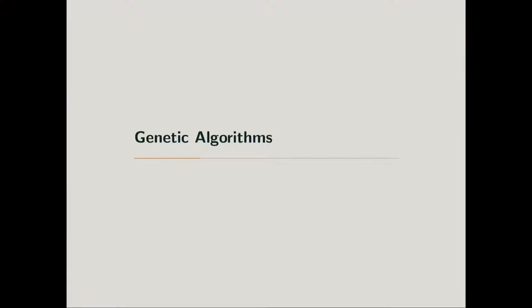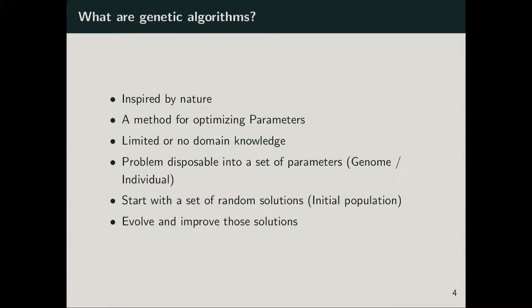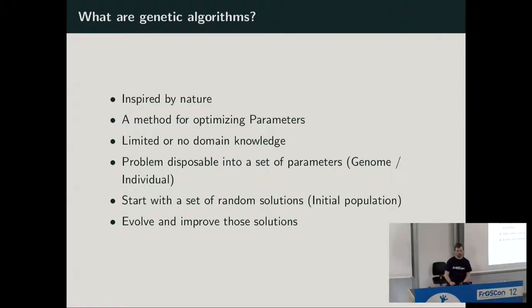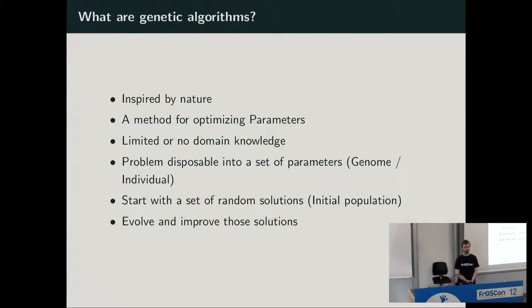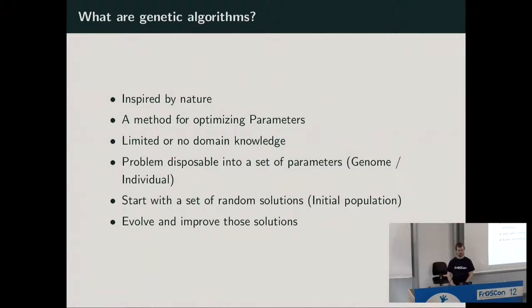So what are genetic algorithms actually? A genetic algorithm is inspired by natural evolution — the same process that humans emerged from. It's basically a method for optimizing parameters in a domain where we have limited or no domain knowledge, which might be fields from physics, or like car driving where I don't really know that much. We can use the algorithm to learn a better strategy.